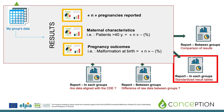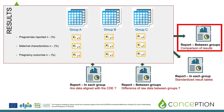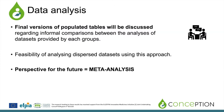For instance, we will record the number of pregnancies reported, every characteristic of patients, and the number of birth defects. In the final report, we will compare the different standardized results of each group and assess the differences between them. Final populated tables will be discussed regarding informal comparisons between the analyses of datasets provided by each group. We will assess the feasibility of analyzing dispersed datasets using this approach.